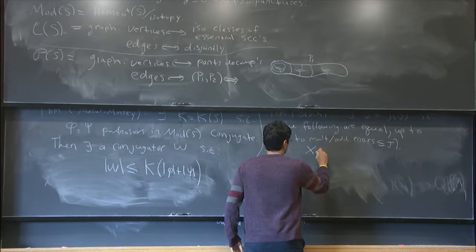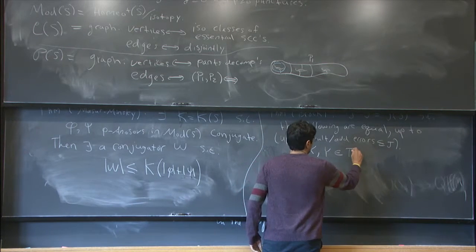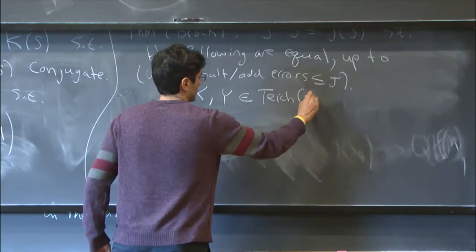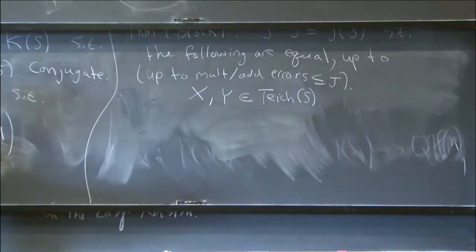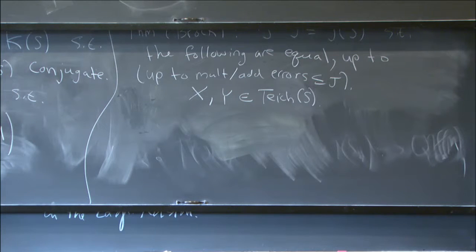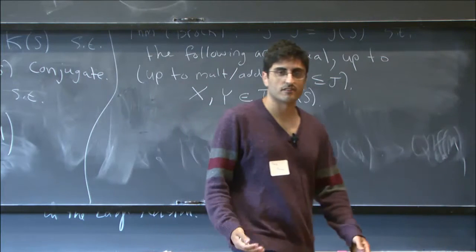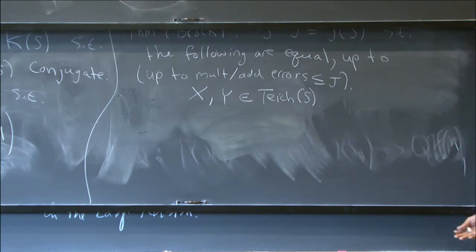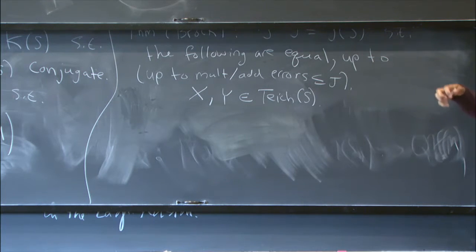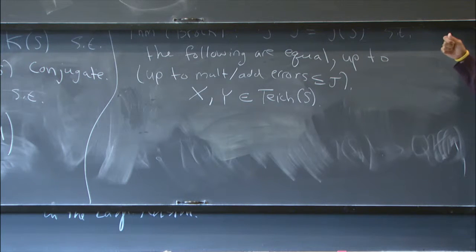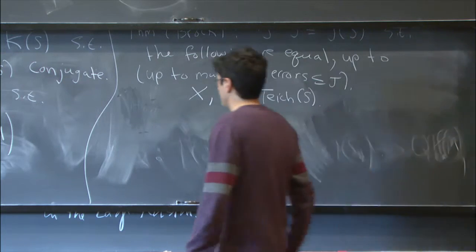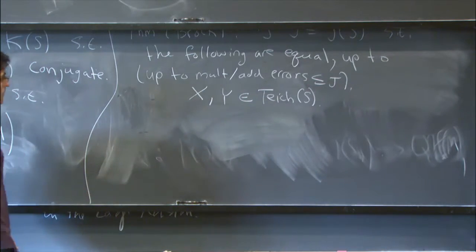Let's say that x and y are any two points in the Teichmüller space of S. We saw from Ian's talk that if I give a pair of points in the Teichmüller space, then there's some convex co-compact hyperbolic 3-manifold homeomorphic to the surface cross ℝ, where the conformal structures at infinity are conformal to x and y respectively. This is called a quasi-Fuchsian 3-manifold, and I'll call it Q of xy.